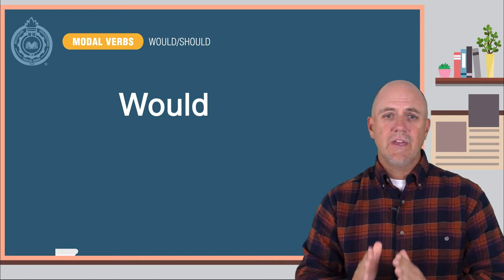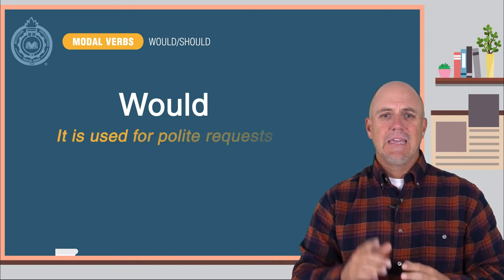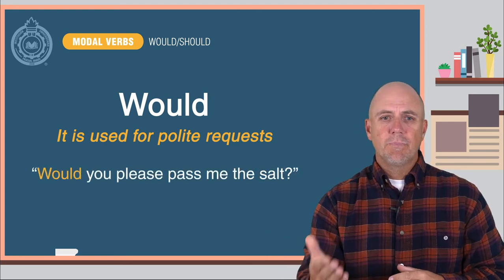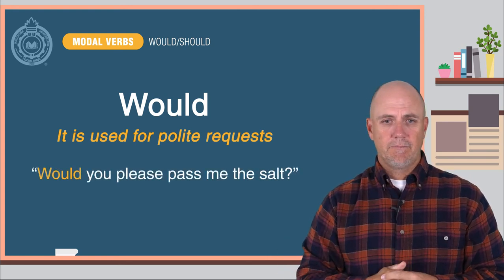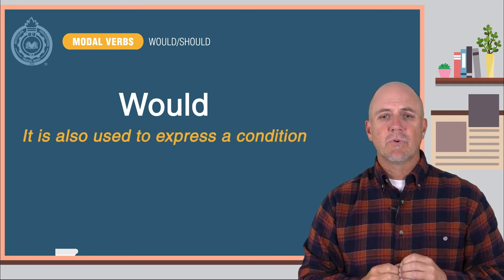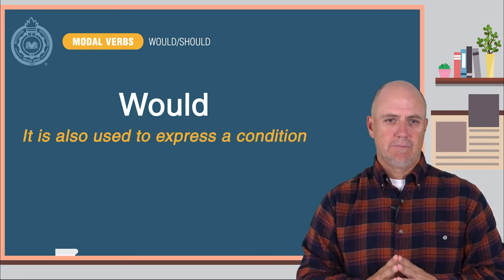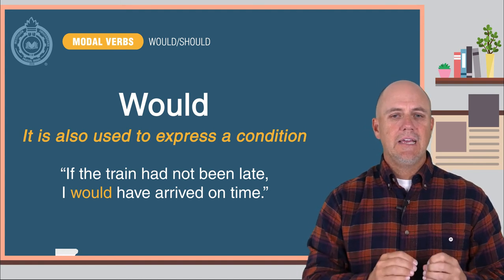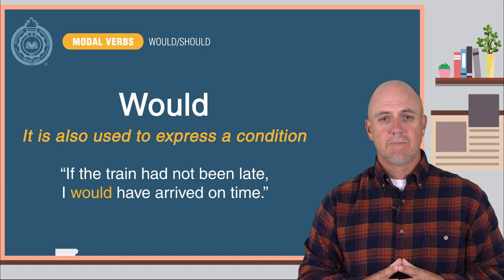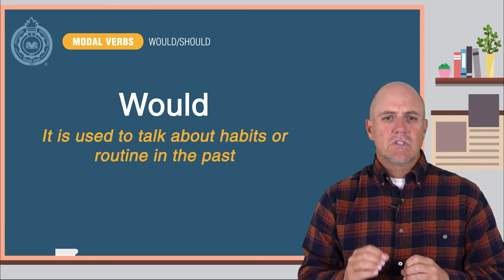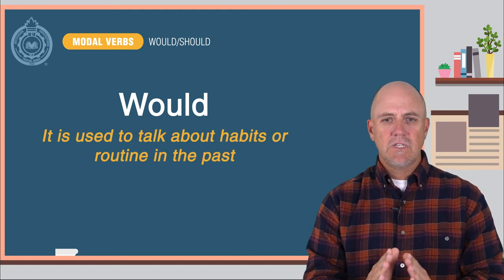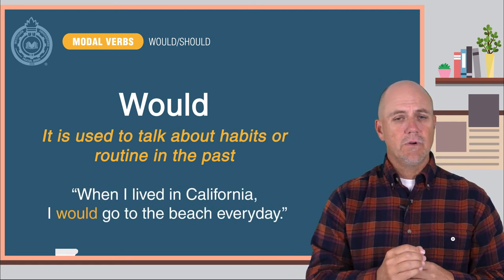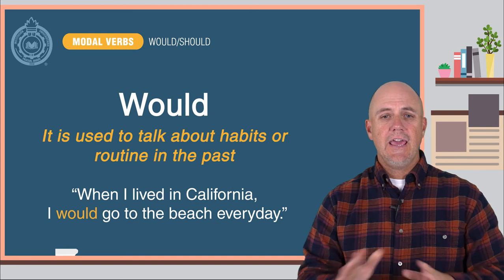WOULD, on the other hand, has many different uses. It is used for polite requests — for example, would you please pass me the salt? WOULD is also used to express a condition — for example, if the train had not been late, I would have arrived on time. WOULD is also used to talk about habits or routine in the past — for example, when I lived in California, I would go to the beach every day.